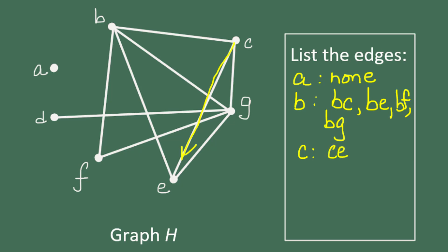Then I'm going to look for a connection between C and F, but there isn't one. So I won't list CF. And then after F comes G. There is a connection between C and G. So I'm going to list that edge, CG.